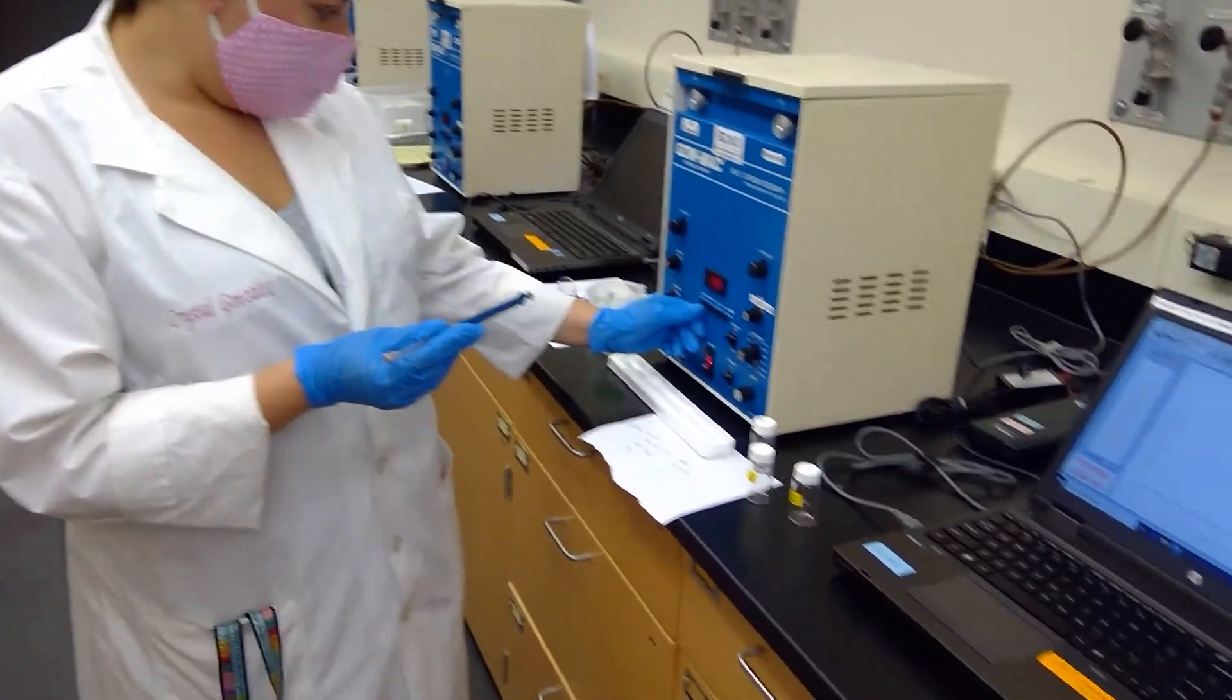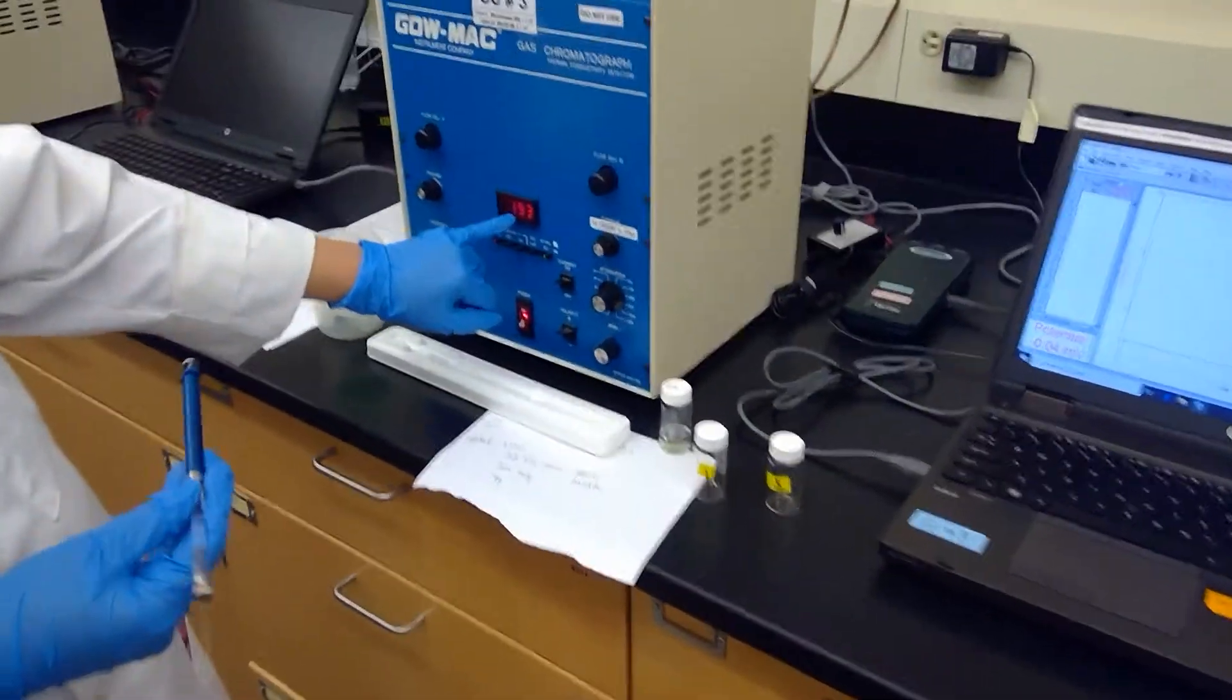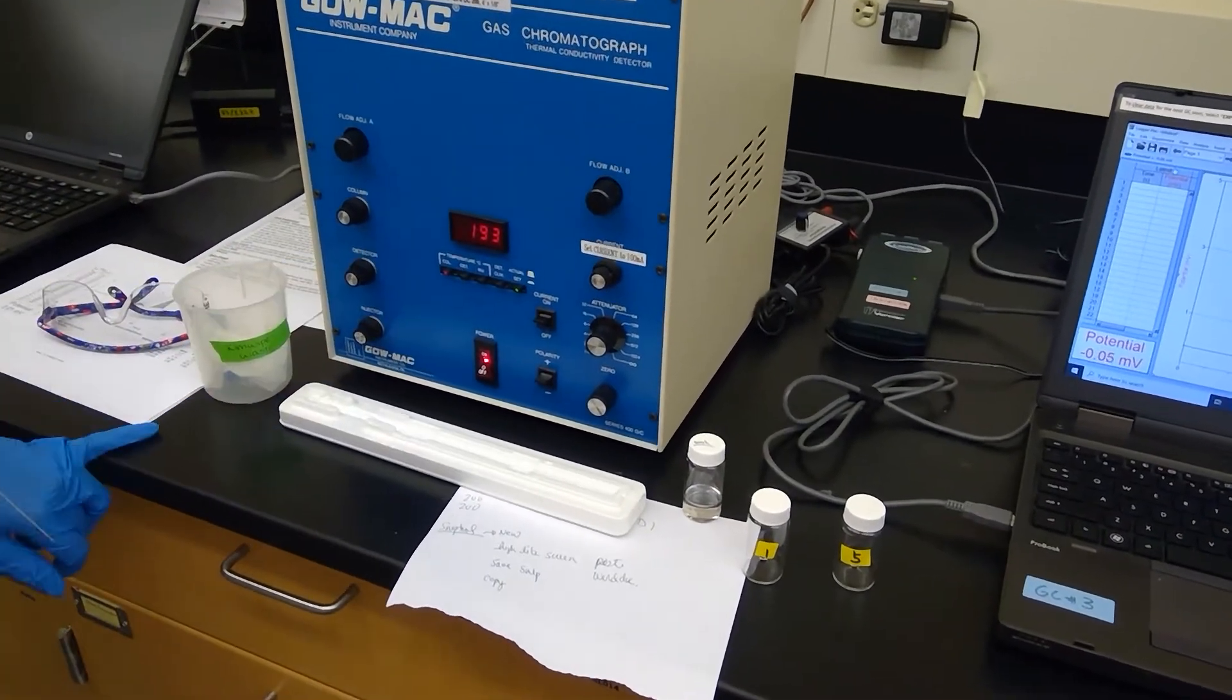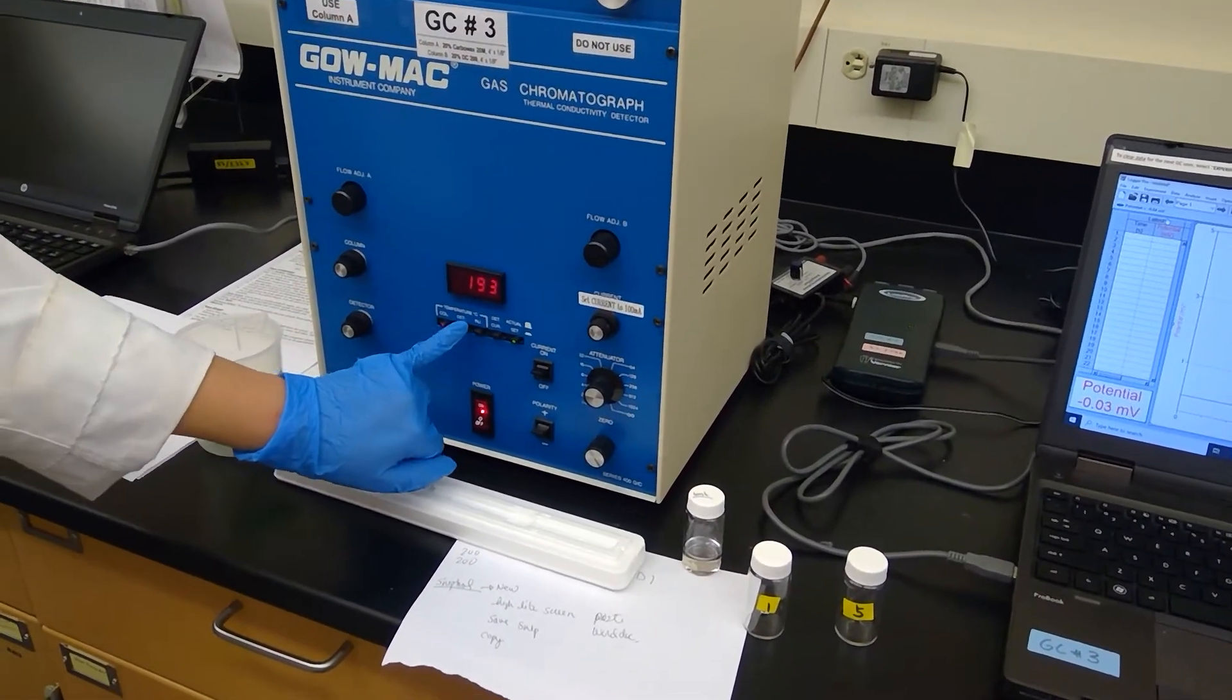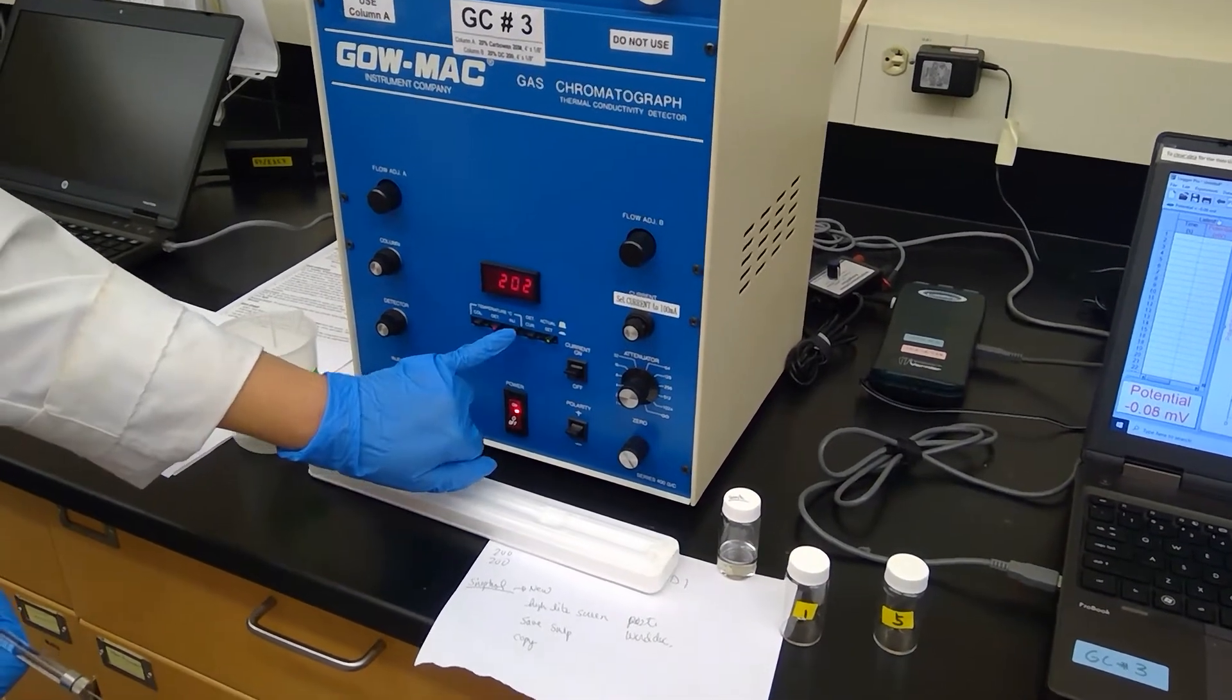So if we take a look here, I'm going to go ahead and press a couple buttons and show you that our column temperature is actually quite hot. So this is in degrees Celsius. Our column is currently at 193 degrees Celsius. Our detector is at 202 degrees Celsius and our injector,